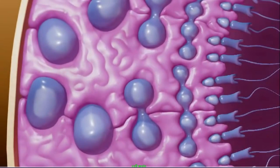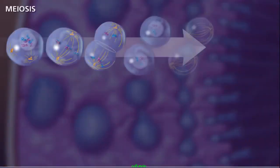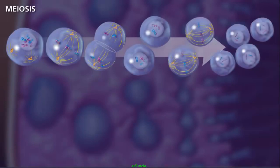Meiosis occurs in special cells called germ cells within the gonads of males and females. For the successful reduction in the number of chromosomes to occur in the new haploid daughter cells, two rounds of divisions are necessary.